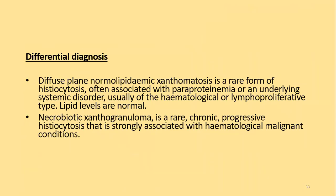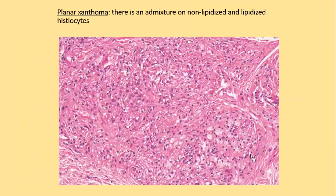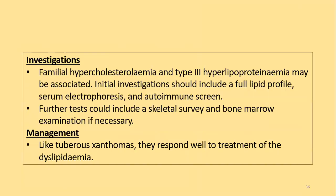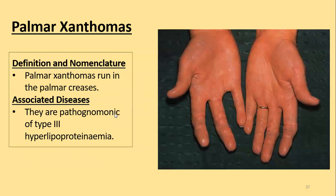Diffuse plane normolipemic xanthomatosis is a rare form of histiocytosis often associated with paraproteinemia and an underlying systemic disorder, usually of hematological or lymphoproliferative type. Another differential is necrobiotic xanthogranuloma, a chronic progressive histiocytosis. Plane xanthomas show sheets of foamy macrophages intermixed with non-lipidized macrophages. Familial hypercholesterolemia and type 3 hyperlipoproteinemia should be excluded by full lipid profile, serum electrophoresis, and autoimmune screening; further tests include skeletal survey and bone marrow examination.